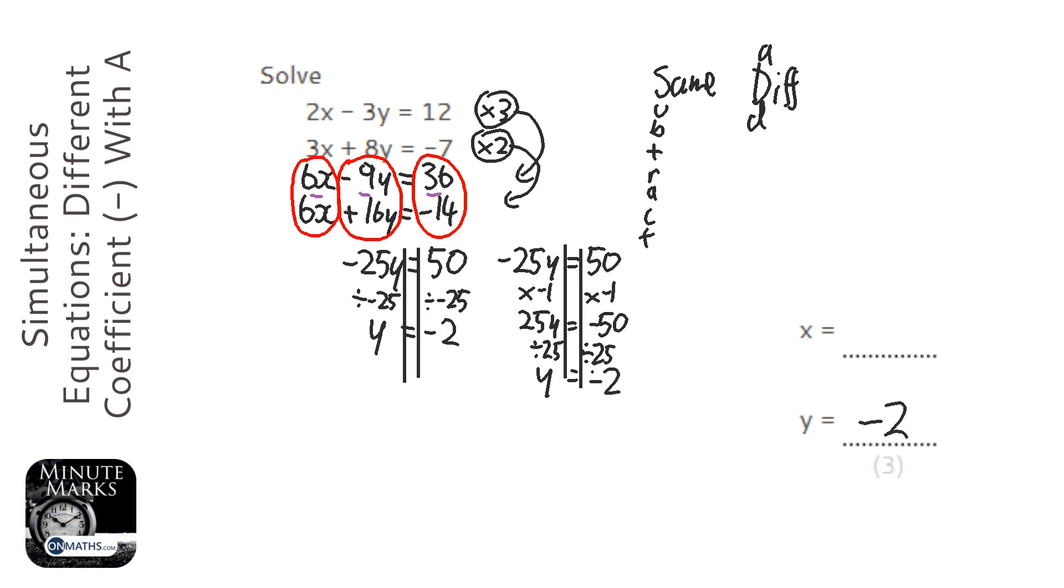OK, now we need to put that into the equation. So I'm going to pick the top one, it doesn't matter which one you pick. So we've got 2x minus, and then we've got 3 times minus 2 equals 12.